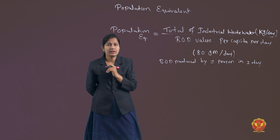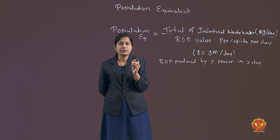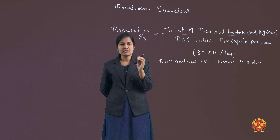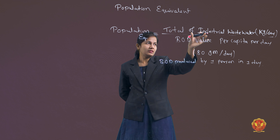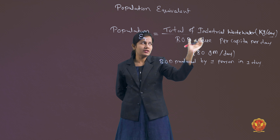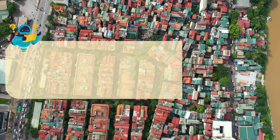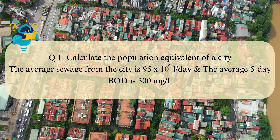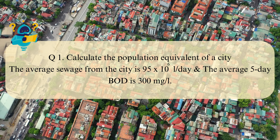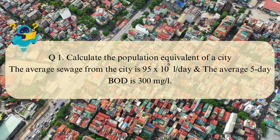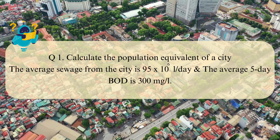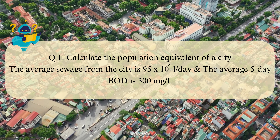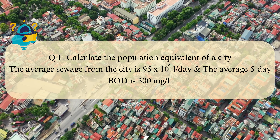Now, what is the question? Calculate the population equivalent of a city. The average sewage from the city is 95 into 10 to the power 6 liters per day. The average 5-day BOD is 300 mg per litre.